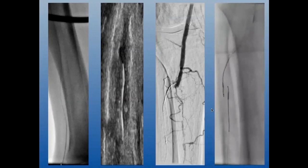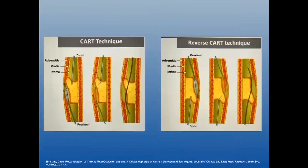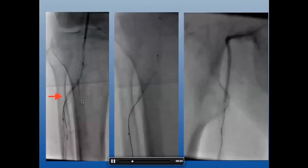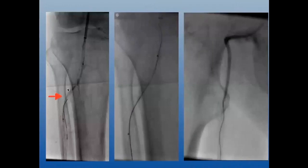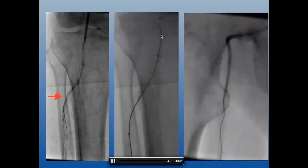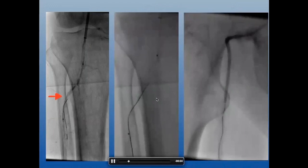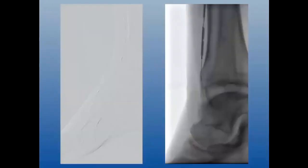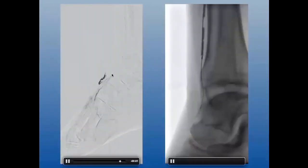There are two techniques to allow the two channels to communicate. Technique one: CART or reverse CART — balloon from below and balloon from above. In this case I did a balloon from above; once I disrupted the tissue between the two guidewires, I was able to get my guidewire into the true native lumen of the artery and eventually advance a catheter and sheath to obtain through-and-through wire access.